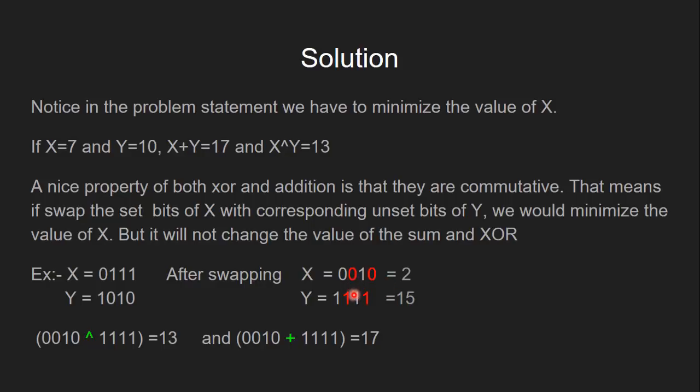And if you find the XOR of these two numbers it's 13 and if you find the sum of these two numbers it's 17. So we can clearly see that we are able to minimize the value of X at the same time there is no impact on the sum and XOR.